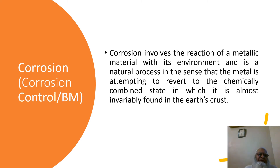This definition is taken from Corrosion Control BM, which states that corrosion involves the reaction of a metallic material with its environment, and is a natural process in the sense that the metal is attempting to revert to the chemically combined state in which it is almost invariably found in the earth's crust.